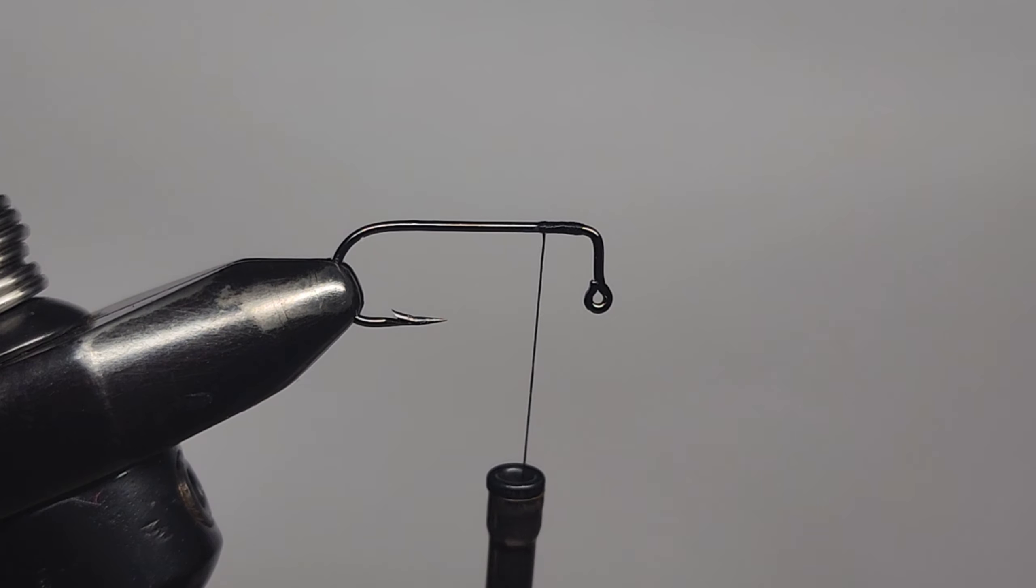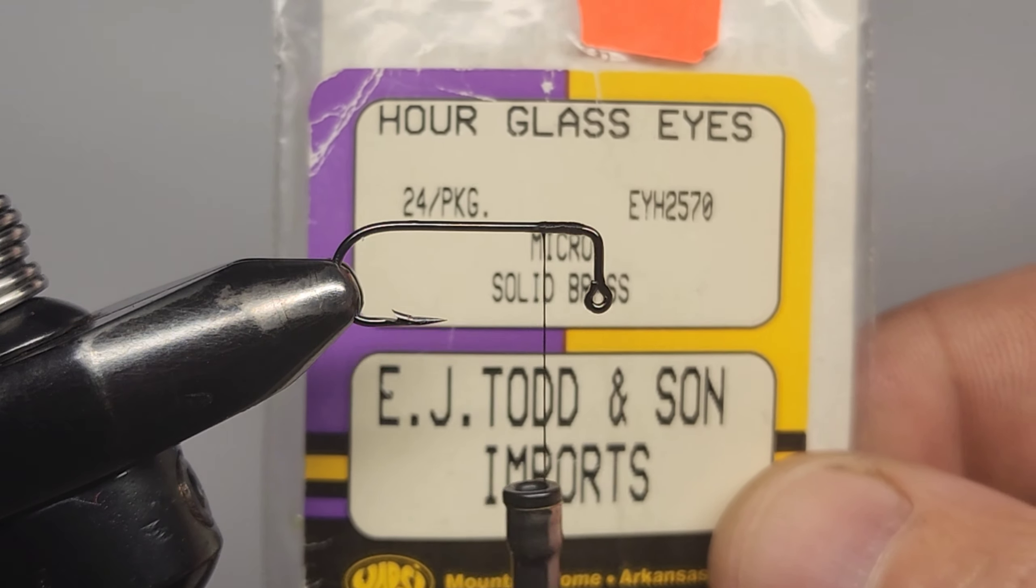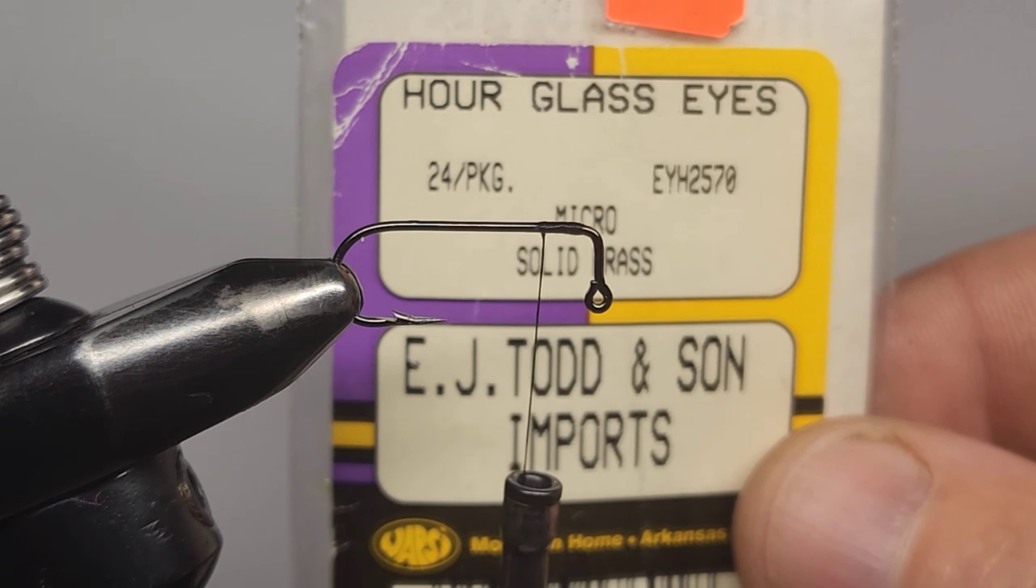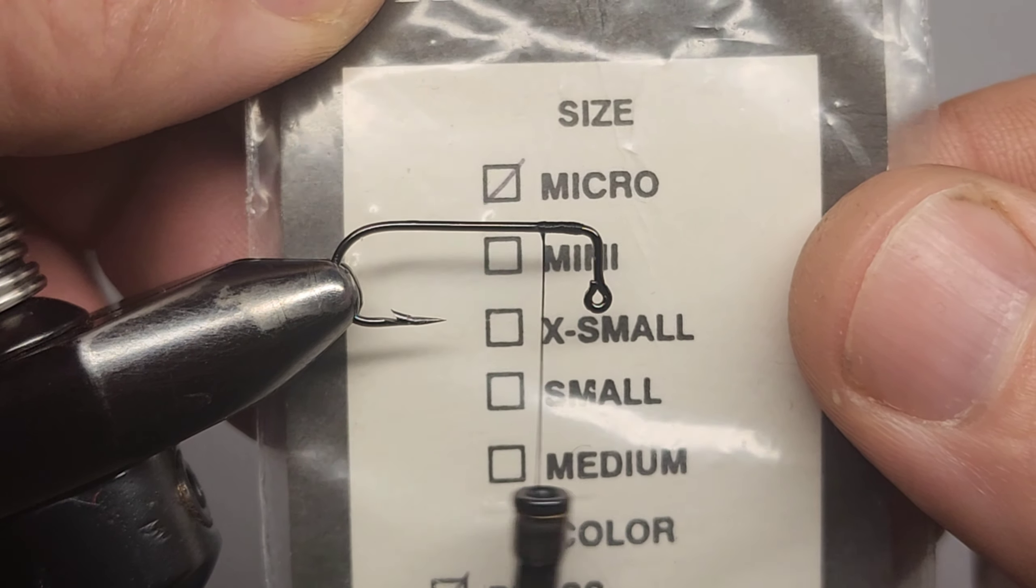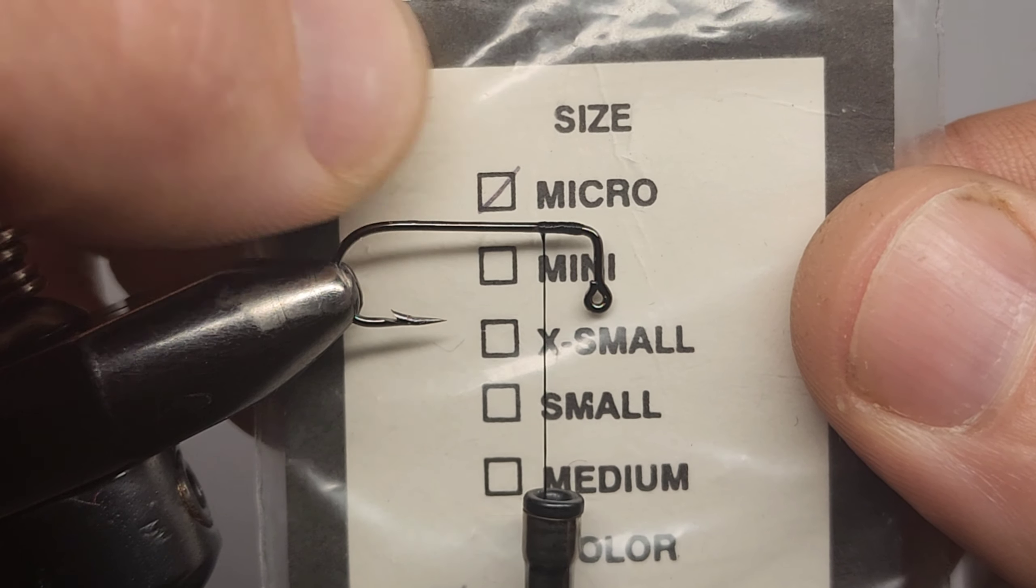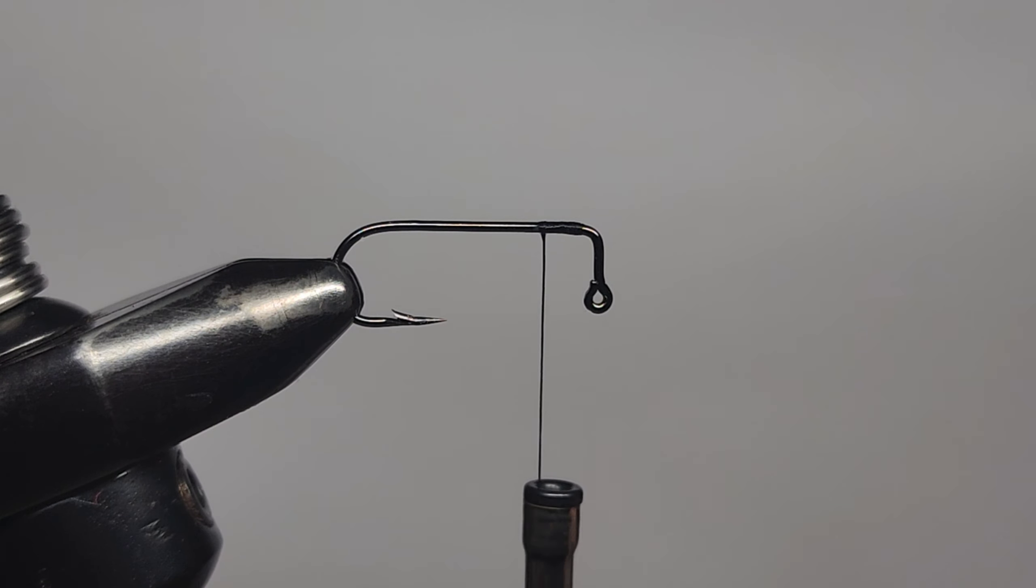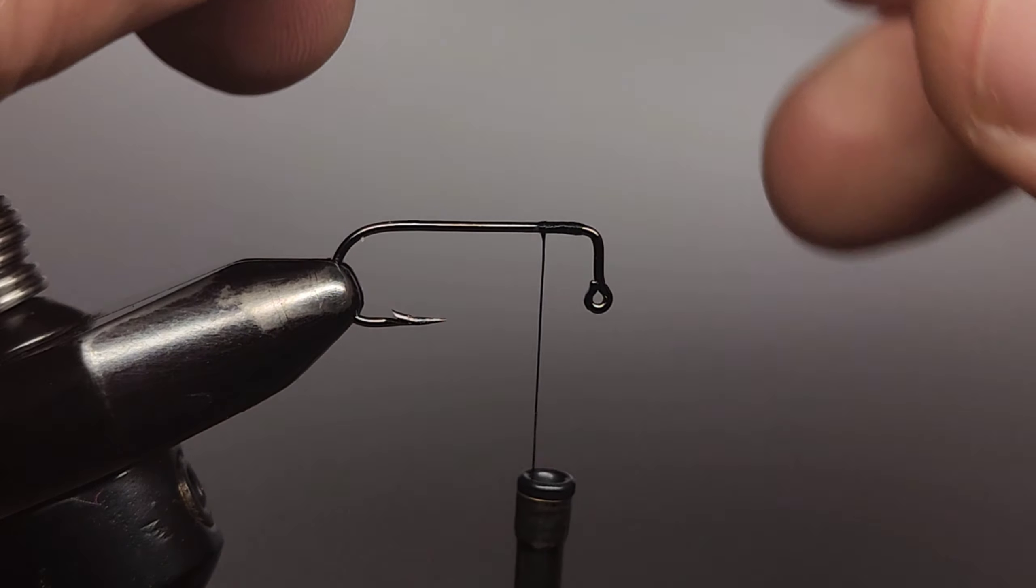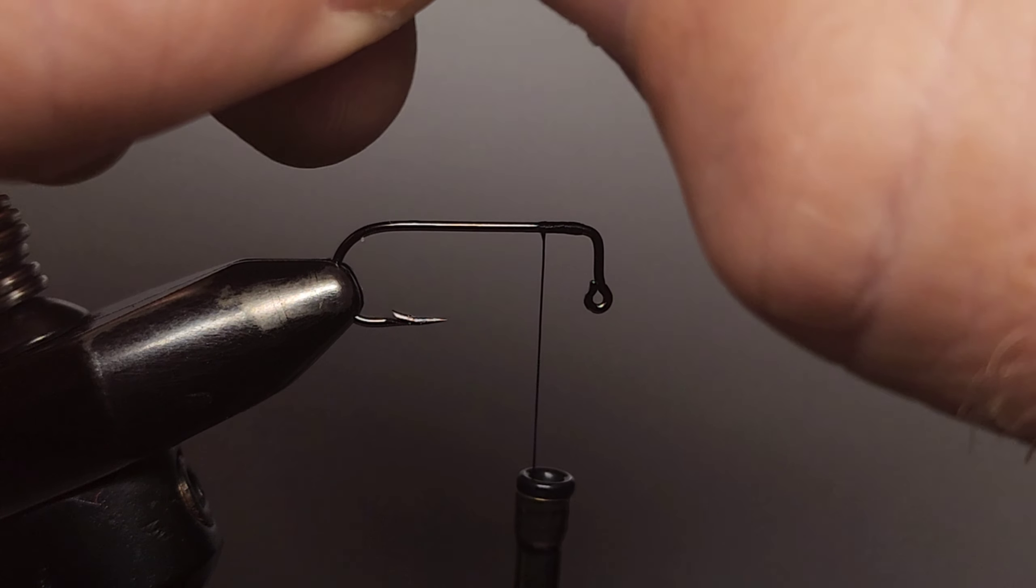Snip off the excess. For the eyes, I'm using Wapsi hourglass eyes. Size on these ones is micro. Micro are a good size. They're heavy enough to sink the fly but not heavy enough to hit the water too hard.